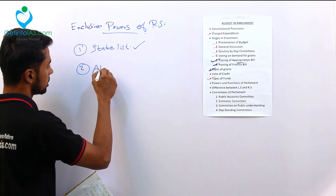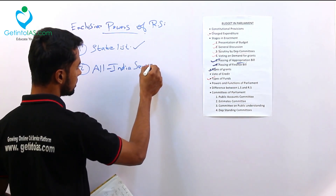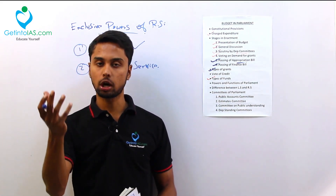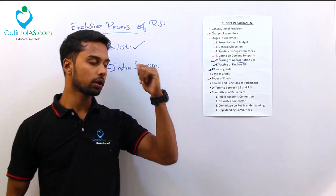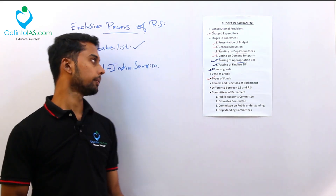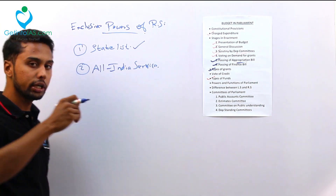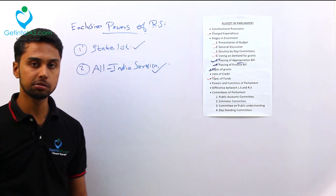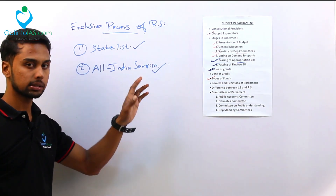Next exclusive power is All India Services — a service common to both the center and state. Till date there are three services included: IAS, IPS, and IFS. To make any changes to or to include any new service in All India Services, Rajya Sabha has the exclusive power. If Rajya Sabha moves a resolution, new services can be added.